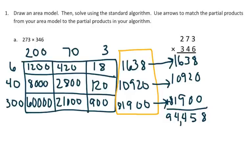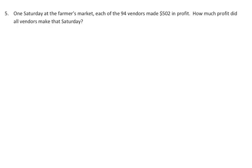So I have an answer of 94,458. So 273 times 346 is 94,458. Again, I like to box that in red to show that as my answer. The next homework problem I'm going to use as an example is problem number five.